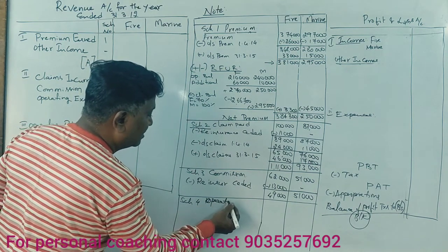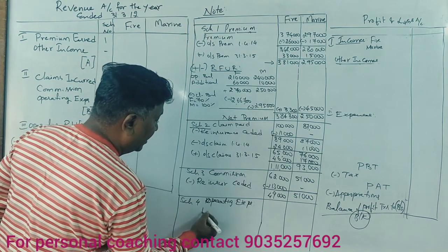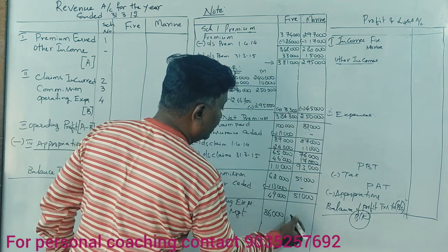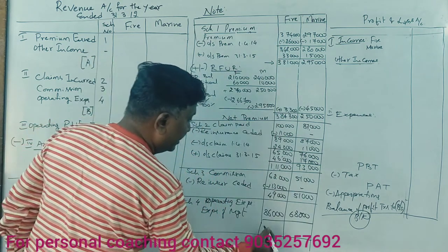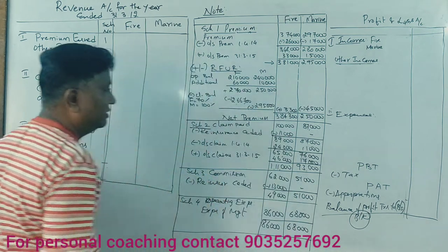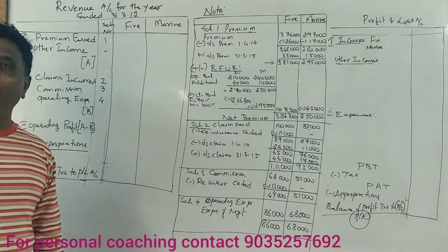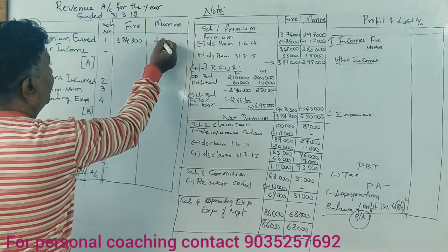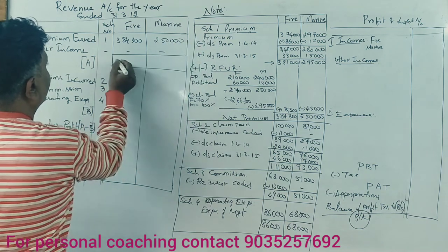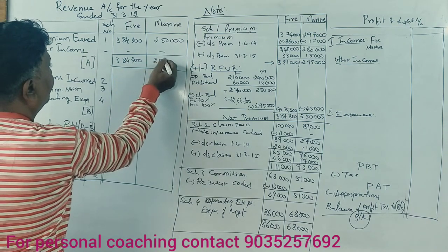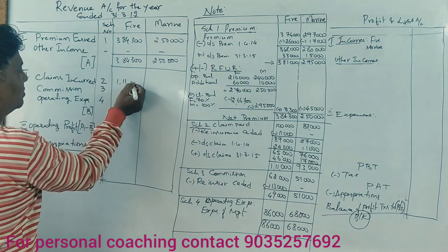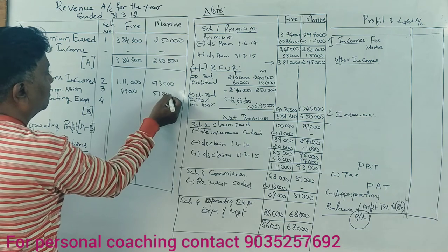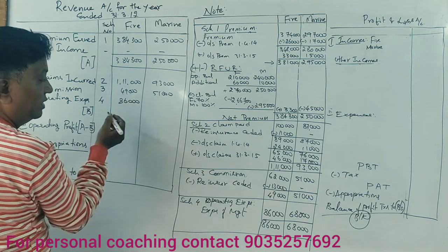Schedule Number 4 — Operating expenses: Expenses of management are ₹86,000 for fire and ₹68,000 for marine. Revenue account is now complete. Net premium: ₹3,84,300 and ₹2,50,000. Claims: ₹1,11,000 and ₹93,000. Commission: ₹49,000 and ₹51,000. Operating expenses: ₹86,000 and ₹68,000.